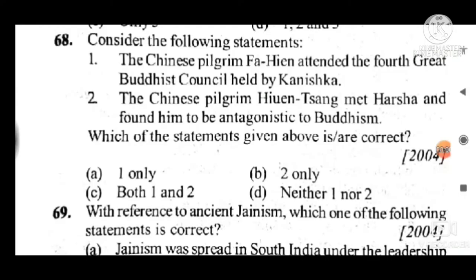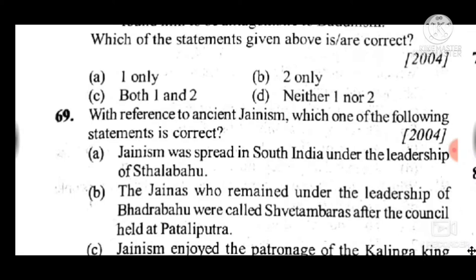Question 68: Consider — the Chinese pilgrim Fa Hien attended the Fourth Buddhist Council held by Kanishka, and the Chinese pilgrim Hiuen Tsang met Harsha and found him antagonistic to Buddhism. Answer is D — neither one nor two is correct.